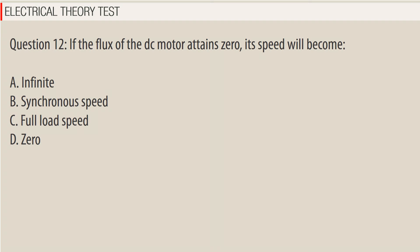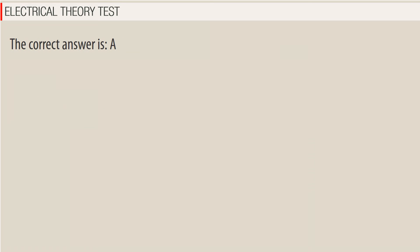Question 12: If the flux of the DC motor attains 0, its speed will become — A. Infinite, B. Synchronous speed, C. Full load speed, D. 0. The correct answer is A.